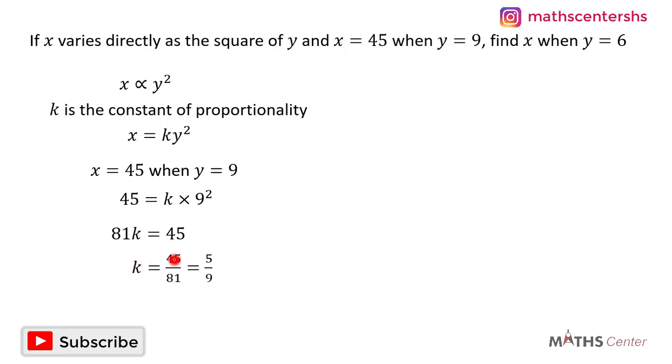And when I do that, I'm going to have k is equal to 45 divided by 81, which is 5 divided by 9. So the value of k is 5 divided by 9. And so our equation, which is x is equal to ky squared, can be written as x is equal to 5 divided by 9 y squared.